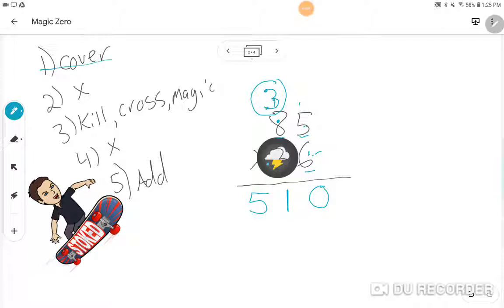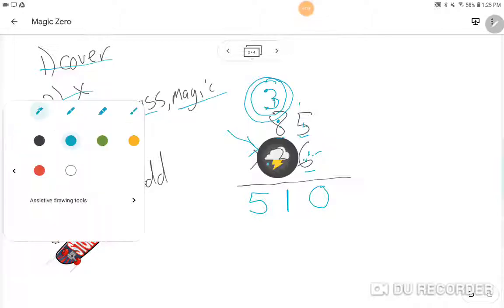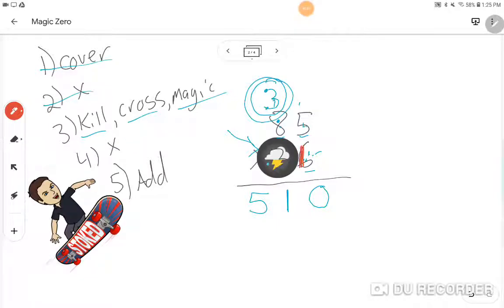We covered. That's where this came from. Then we multiplied. We did 6 times 5 and then 6 times 8, and we added the 3. And now we are going to kill, cross, and magic. We are going to kill the 6 because we're all done with the 6. We are going to cross out the 3 because that number is now done, and we're going to put down our magic 0.